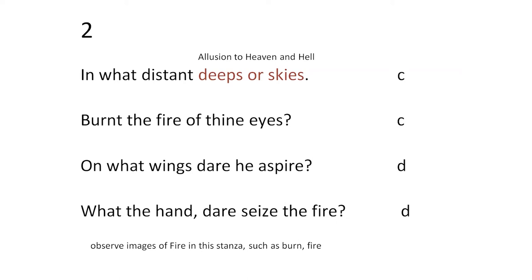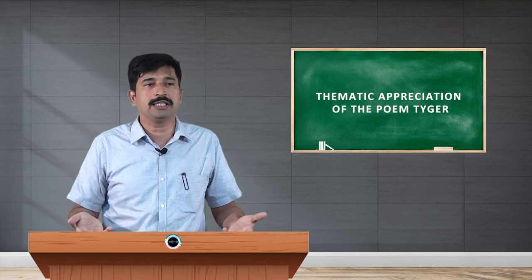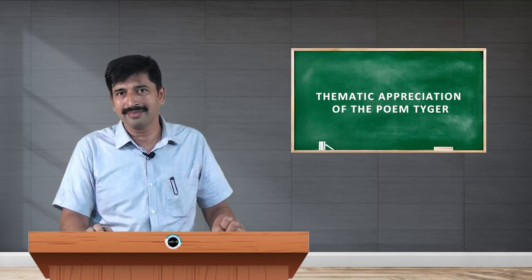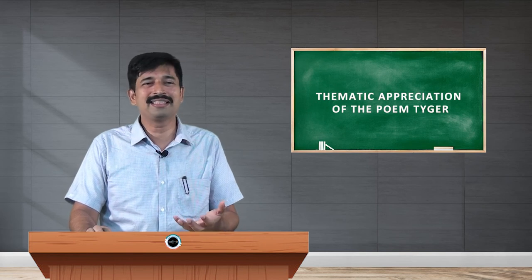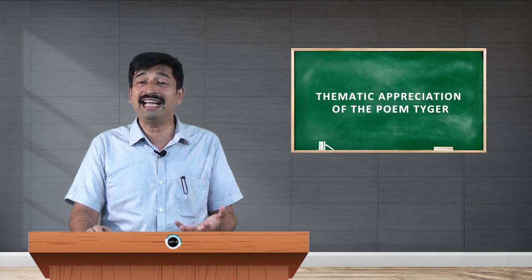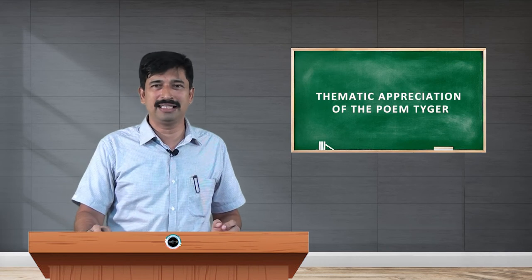'Burnt the fire of thine eyes' — notice again the imagery of fire that moves along with the poem. The tiger's eyes themselves are burning. While describing the burning eyes of the tiger, the poem asks: who has dared to create such a thing? 'On what wings dare he aspire?' — 'he' referring not to the tiger but to the one who aspired to create it. 'What the hand dare seize the fire?' — look at the enormous capability of the creator: a hand that could dare to seize fire itself. Holding fire is superhuman.